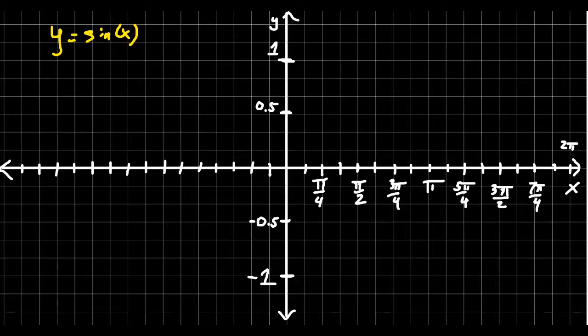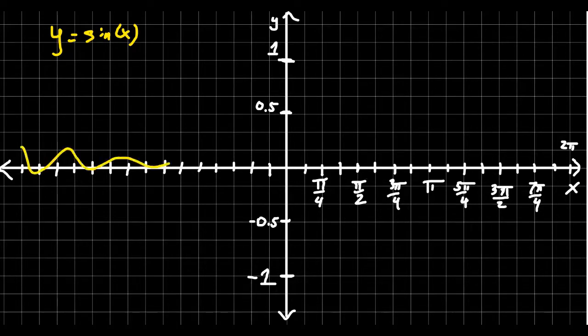In this video, we want to consider the graph of the function y equals sine of x. Now, some things we know about sine is that its domain is all real numbers, so its graph is going to cover the entire x-axis, but the function is also periodic. It repeats itself every 2π units along the x-axis.